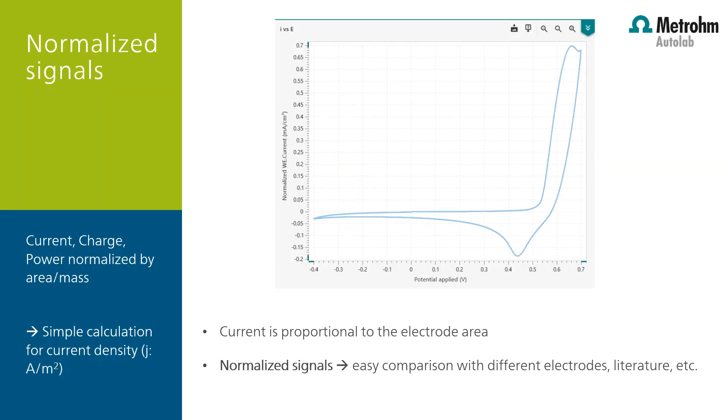It is also important to plot the normalized signals current density data with respect to the applied potential for easy comparison with published data.